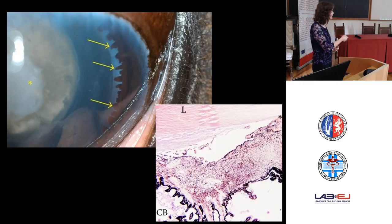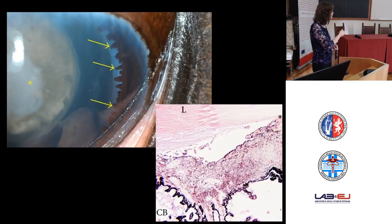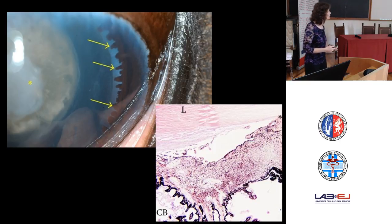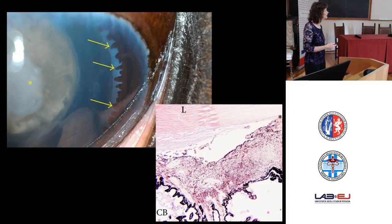In this particular case, the whole tip of the iris did not form. Histologically we can see the ciliary body and the beginning of a little stump of the iris, but everything else is missing. Because the whole tip was missing, they even called it aniridia in this particular case.